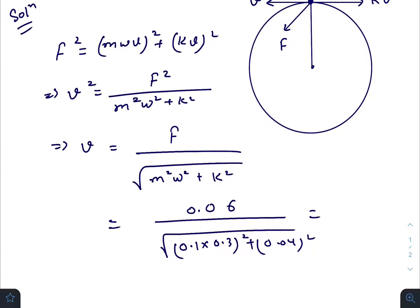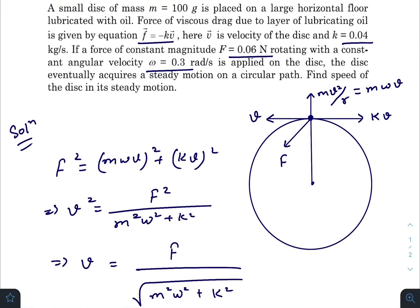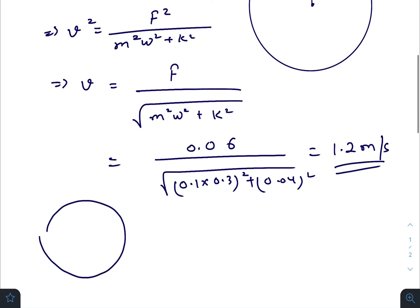So the answer will be 0.03 whole squared plus 0.04 whole squared, square root. The answer is 1.2, so the speed in the steady state will be 1.2 meters per second. I hope you all have found this video very helpful. Thank you.